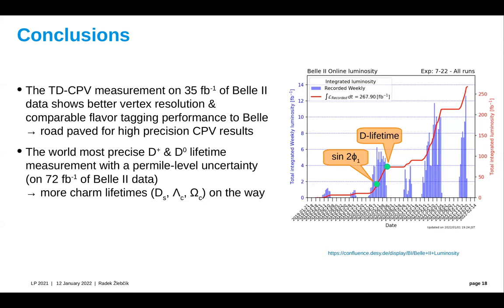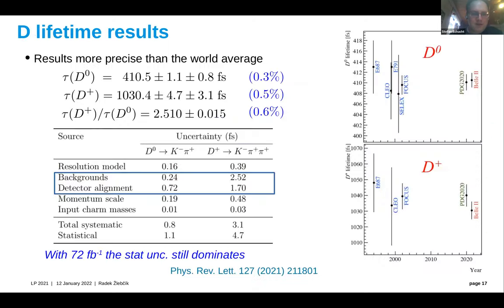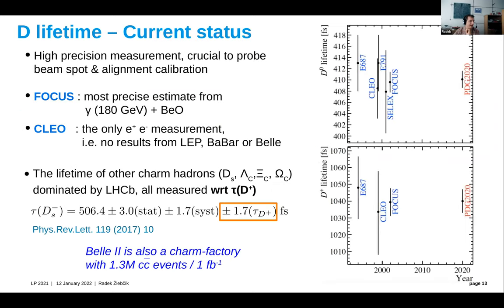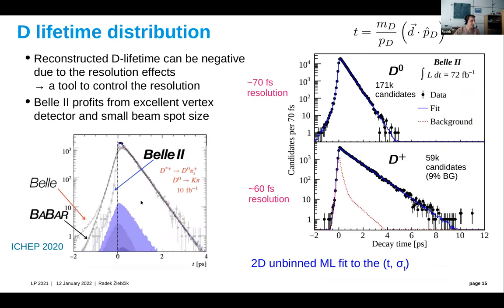Another question was raised about why Bell, BaBar and LHCb did not present lifetime measurements. For Belle, there was an analysis attempt but it was never finished. Looking at the data from Belle and BaBar, the resolution would have been worse for Belle. The session concluded with thanks.